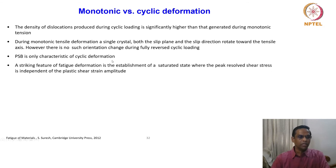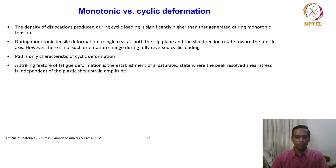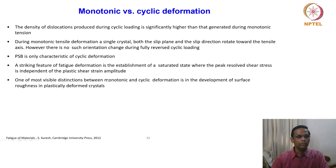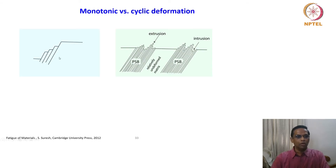PSBs are the only characteristic of cyclic deformation. A striking feature of fatigue deformation is the establishment of a saturated state — all hysteresis loops reach the cyclic saturated state, referred to by the saturation stress σ_s, where the peak resolved shear stress is independent of plastic shear strain amplitude. One of the most visible distinctions between monotonic and cyclic deformation is the development of surface roughness: in monotonic deformation, slip steps develop due to slip, but in cyclic deformation the behavior is very different.